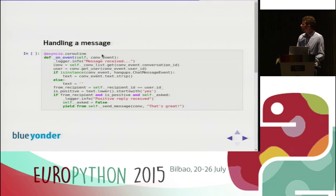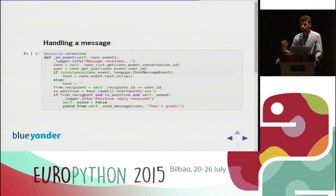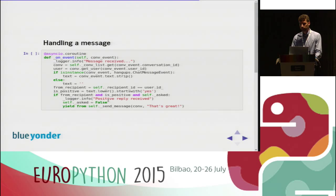For handling incoming messages: on a received message event, we get the conversation, the user ID, and the text sent. We check if the user ID matches the recipient and if the text is a positive answer. If all conditions are met — right state, positive answer, from our buddy — we send the 'that's great' message and go back to the 'asked equals false' state, returning to the initial state in our state diagram.